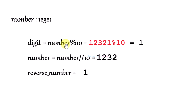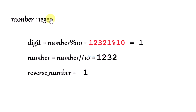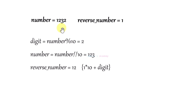If we perform number modulo 10, we get the last digit. Then, to remove that digit from the number for further calculation, we use division. So after removing 1, we get 1232. We have a variable called reverse_number which will store the reversed digits. At this point, number is 1232 and reverse_number is 1.